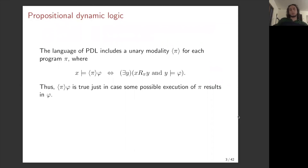The language of propositional dynamic logic includes a unary modality — I'll take the diamond version as basic — a family of unary modalities, one for each program, interpreted in the standard way for a diamond modality. We say x satisfies ⟨π⟩φ if and only if there is some accessible state, where accessibility is with respect to the R_π relation, that is a φ-state. The formula is true at a state just in case some possible execution of the program π results in φ being true — bounded existential quantification over R_π-accessible worlds.